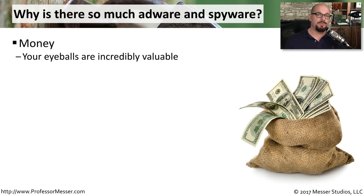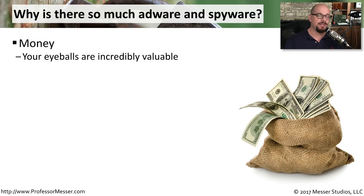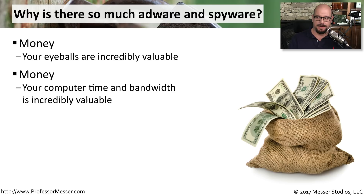If you look at the different types of malware, you'll find that adware and spyware make up a very large percentage of what's out there. That's because your eyeballs are worth money to the bad guys, and if they can embed this onto millions of systems, that's just that much more money they'll be able to make off of advertising.